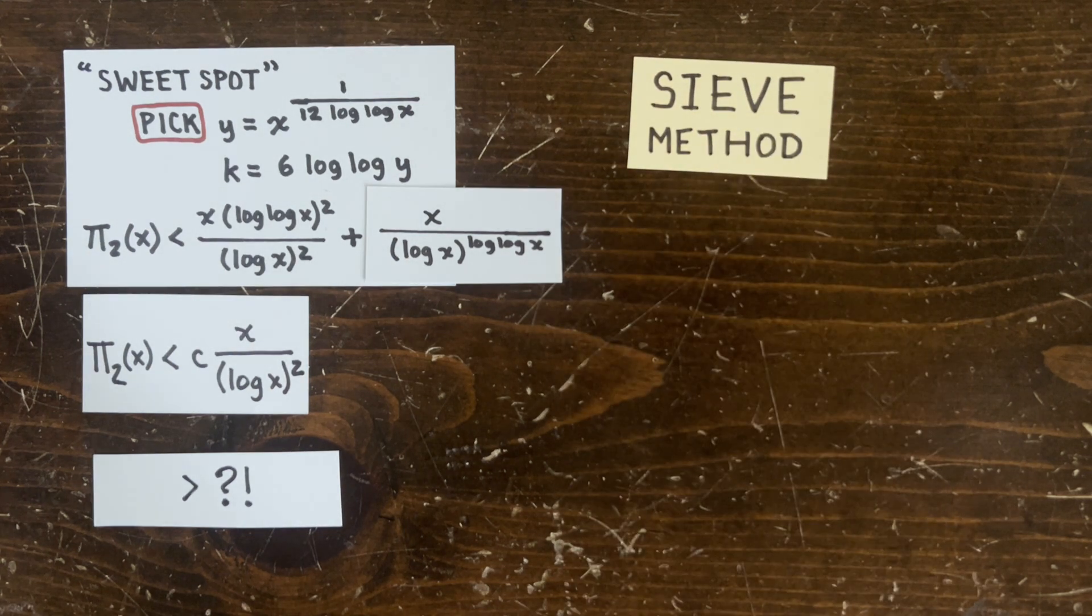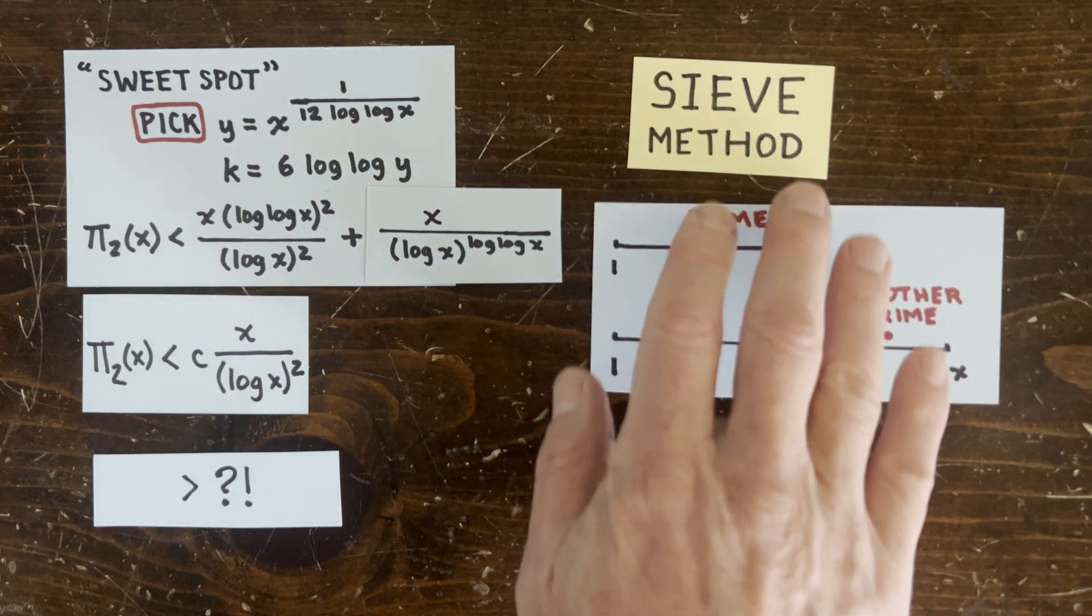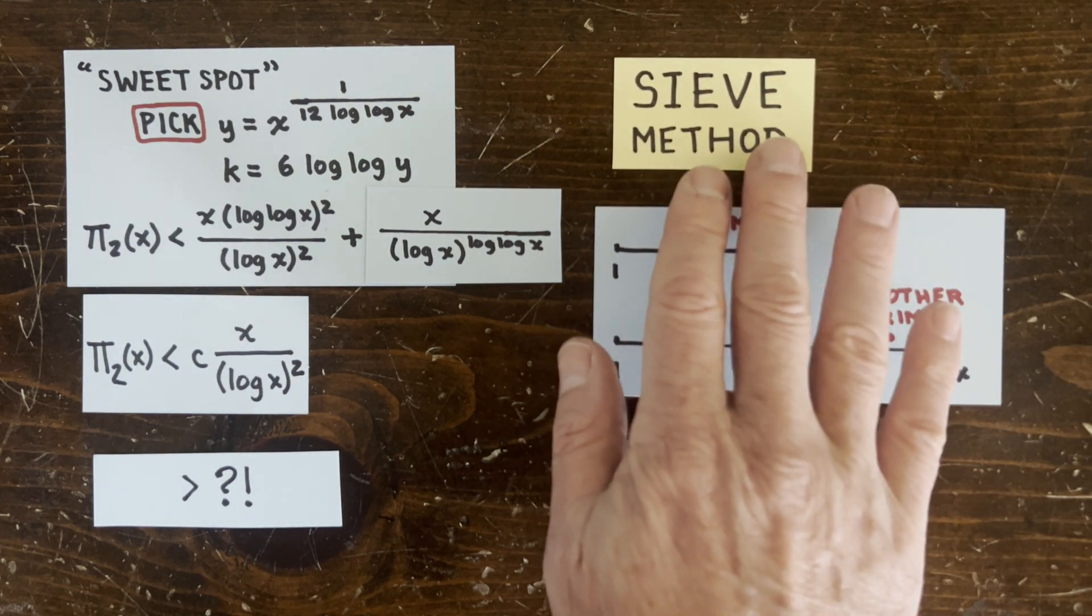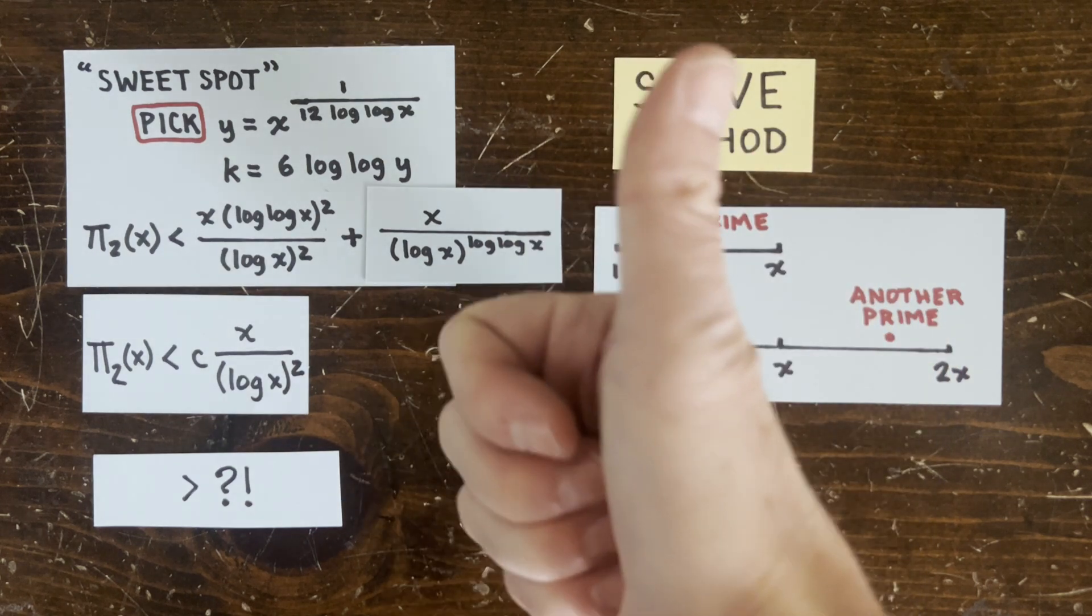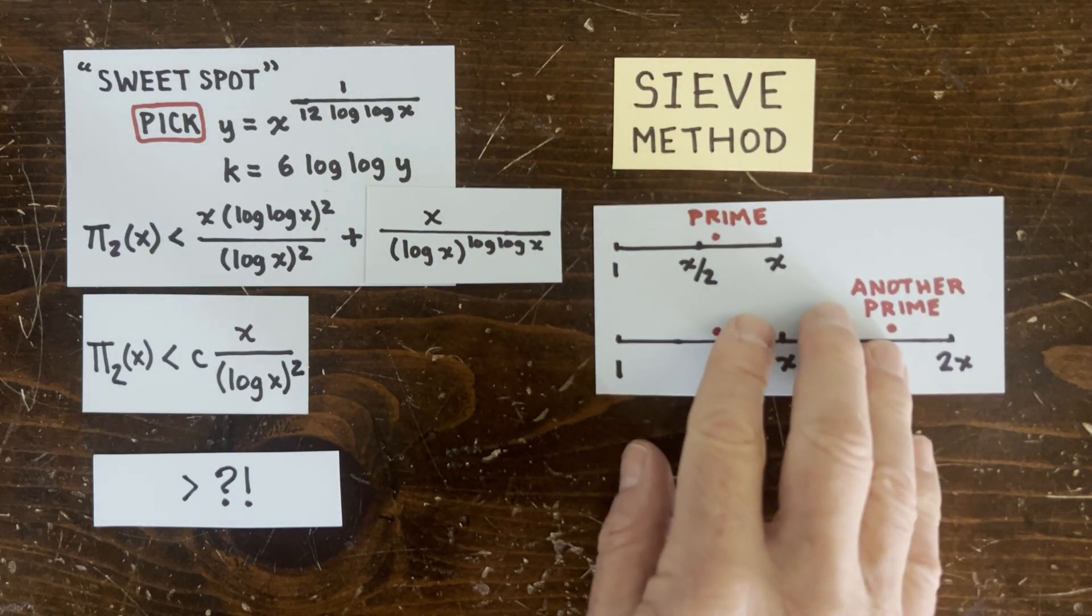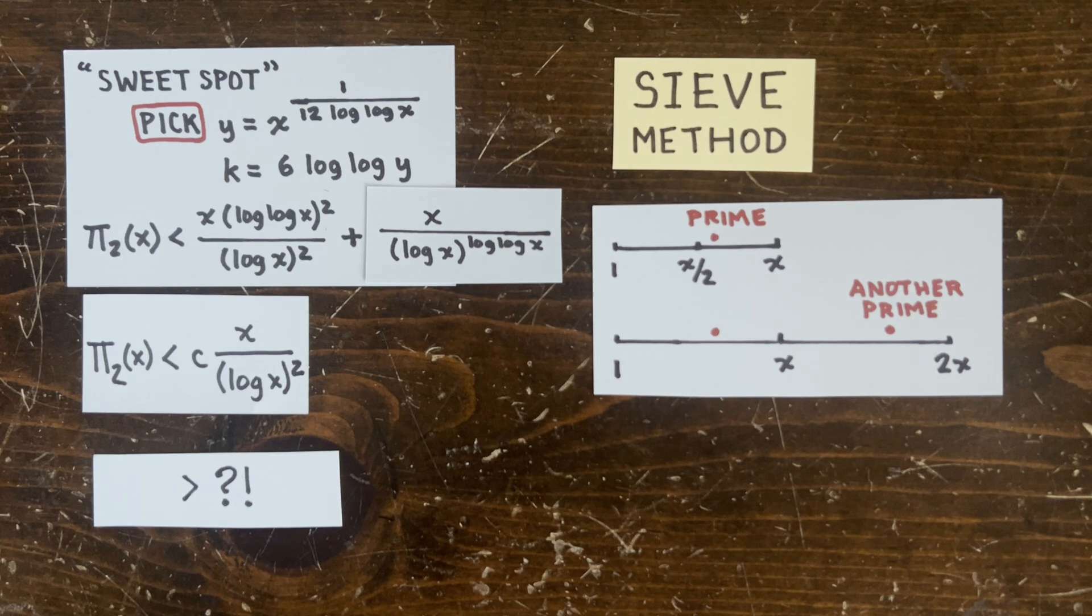Can we even use sieve counting to produce a lower bound? Sure. After we sieve, we don't say there are less than such and such number of potential primes remaining. Instead, we say there are at least such and such number of definite primes remaining. And with regular primes, we can divide 1 to x into two intervals.